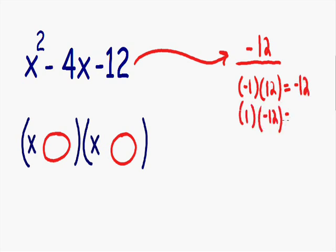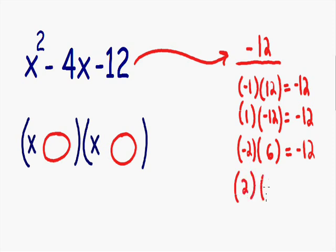A negative 2 times positive 6 gives us a negative 12. And also positive 2 times negative 6 also gives us a negative 12.